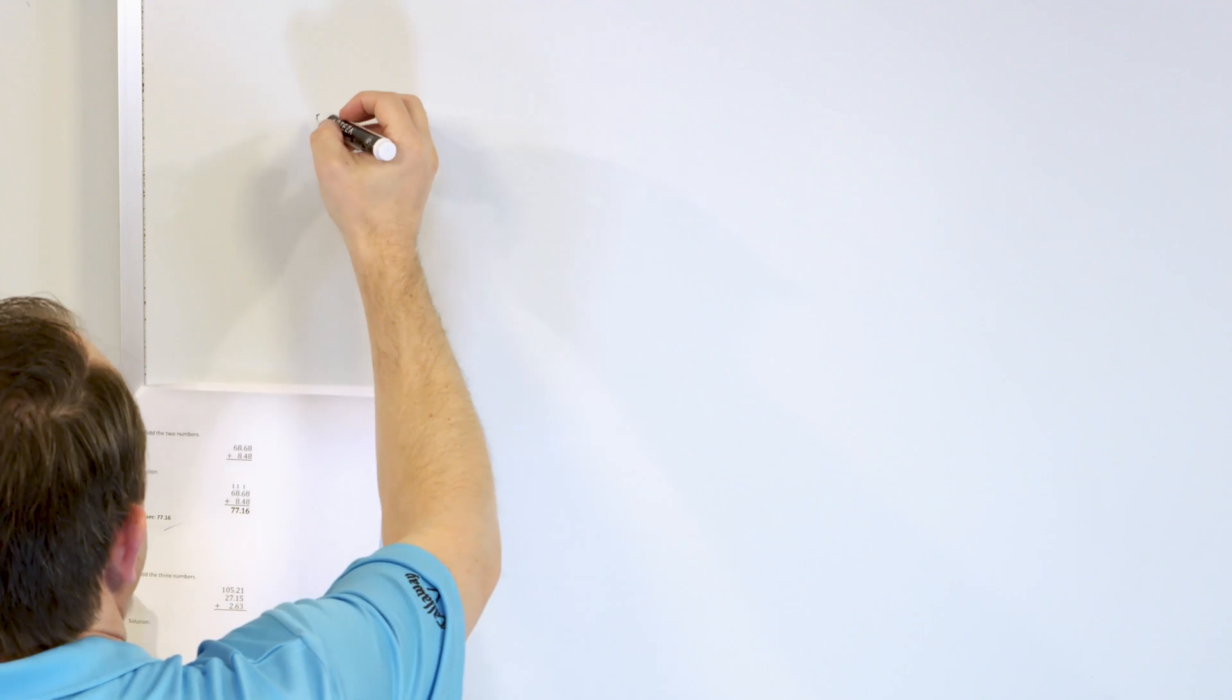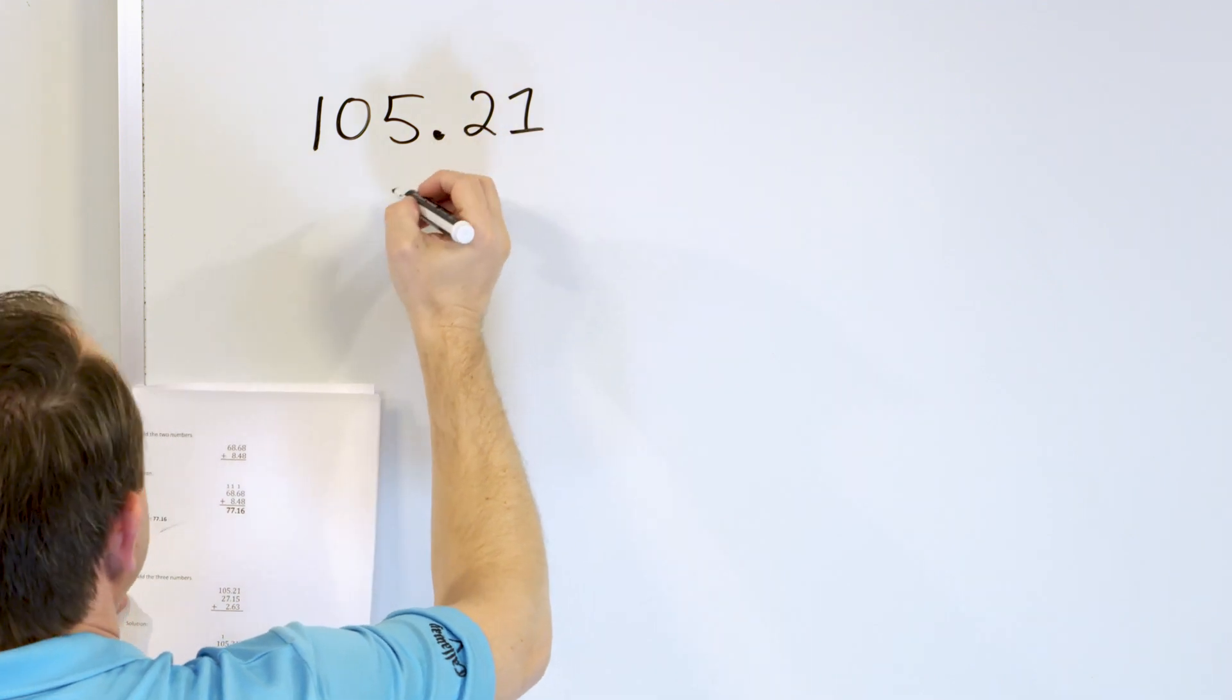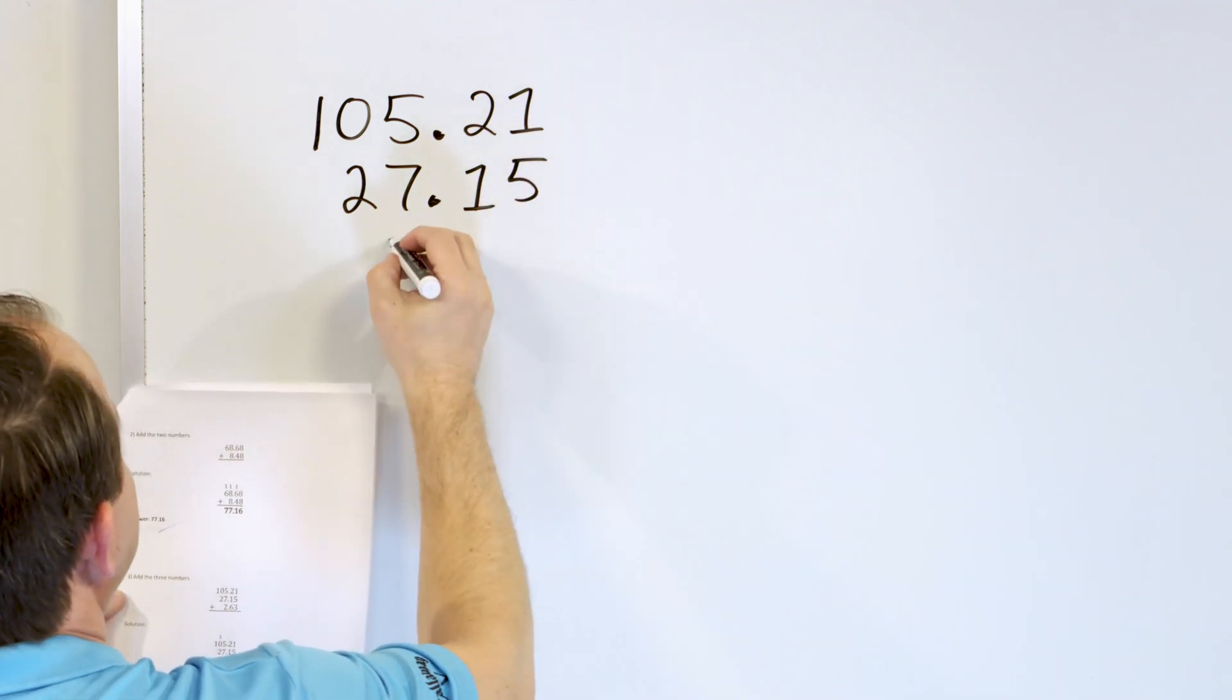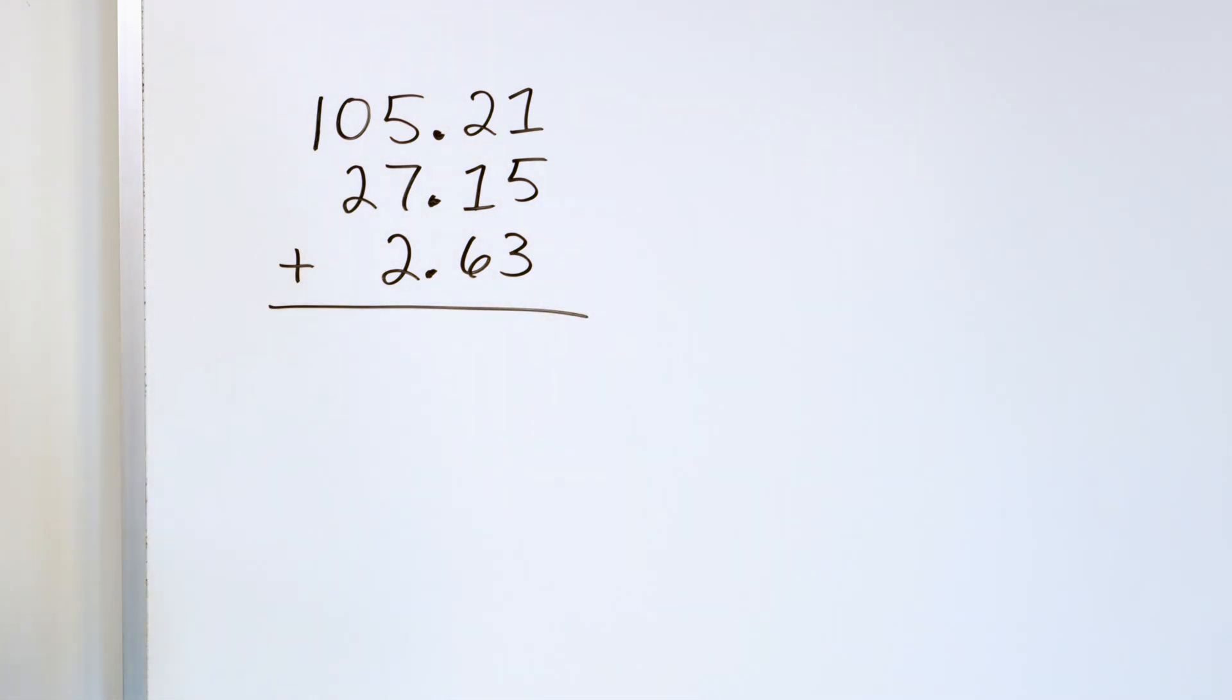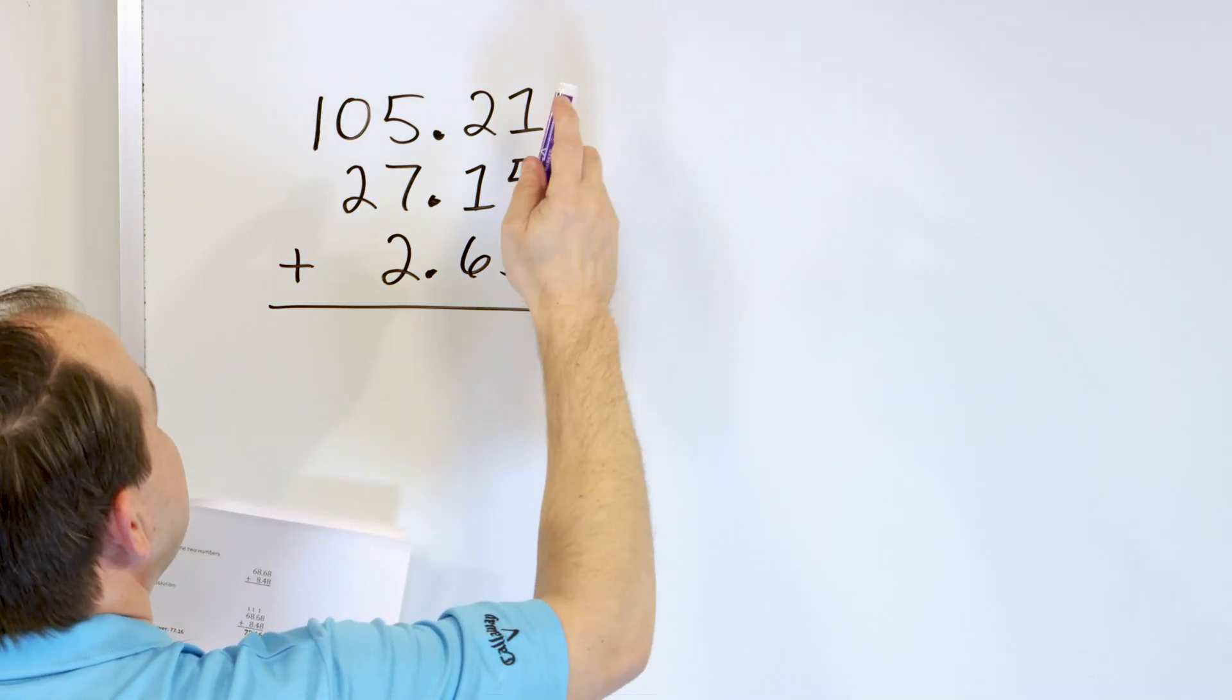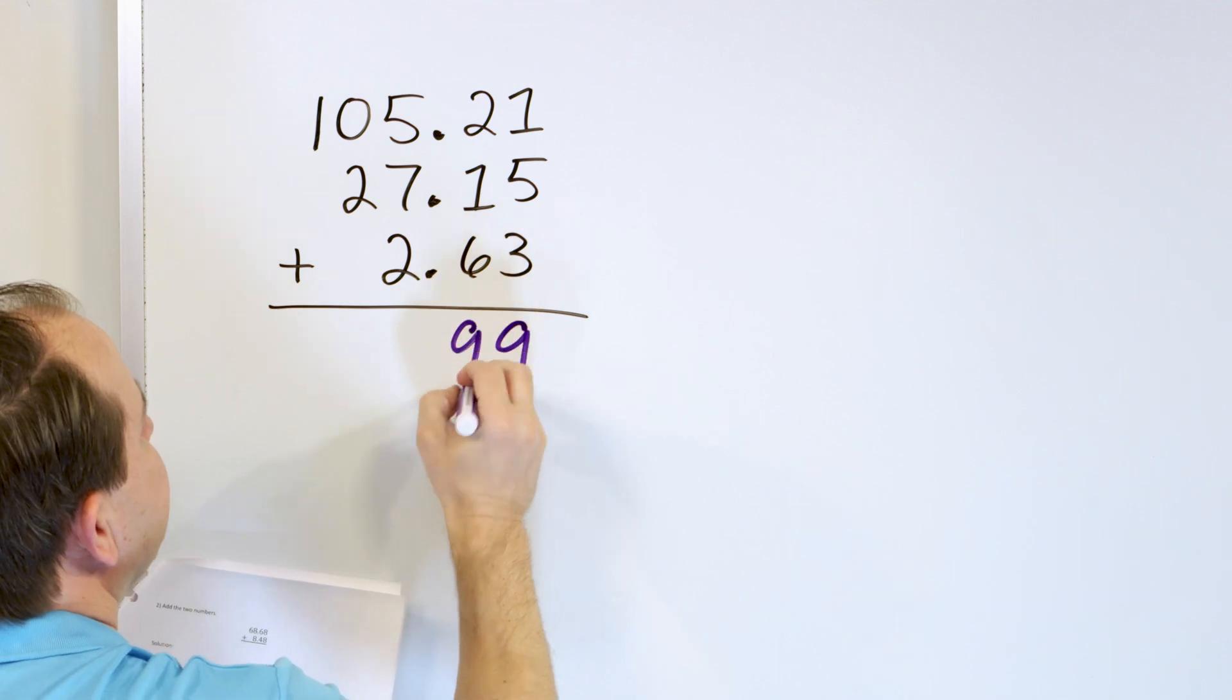Now we're going to add three numbers here. What about 105 decimal 21, and we'll add to that 27.15, and we'll add to that 2.63. Looks like a hard problem, but it really isn't, because we have the decimals lined up. We always have to have that. So, next, 5, then 6, 7, 8, 9. 9 goes in this column.